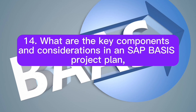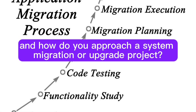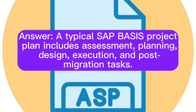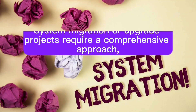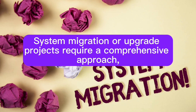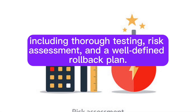Question 14: What are the key components and considerations in an SAP BASIS project plan, and how do you approach a system migration or upgrade project? Answer: A typical SAP BASIS project plan includes assessment, planning, design, execution, and post-migration tasks. System migration or upgrade projects require a comprehensive approach, including thorough testing, risk assessment, and a well-defined rollback plan.